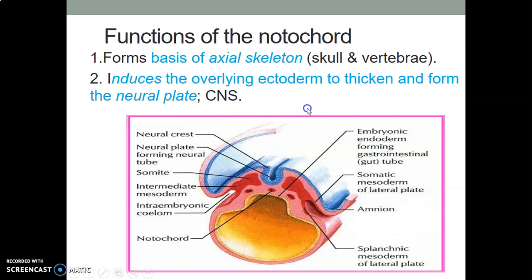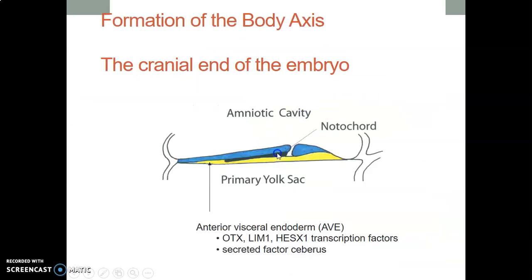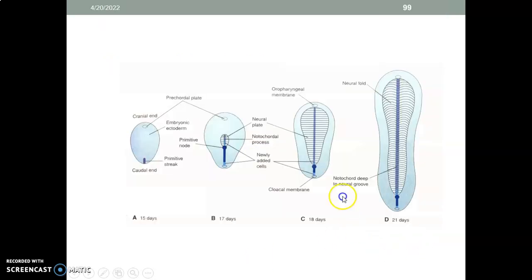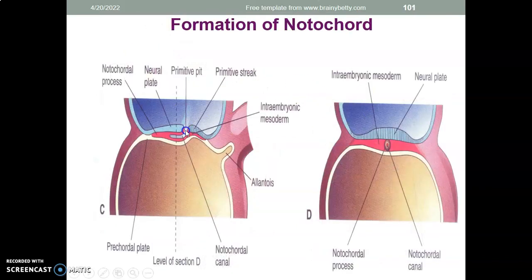Those are the four functions of the notochord: basis of axial skeletons; induces overlying ectoderm to thicken and form the neuroplate; degenerates and remains as the nucleus pulposus of the intervertebral disc; and acts as a primary inducer in early embryo formation. The notochord grows cephalically toward the prechordal plate, providing an axis for embryo development. It induces the overlying ectoderm to thicken and form the neuroplate, from which the brain and spinal cord develop.